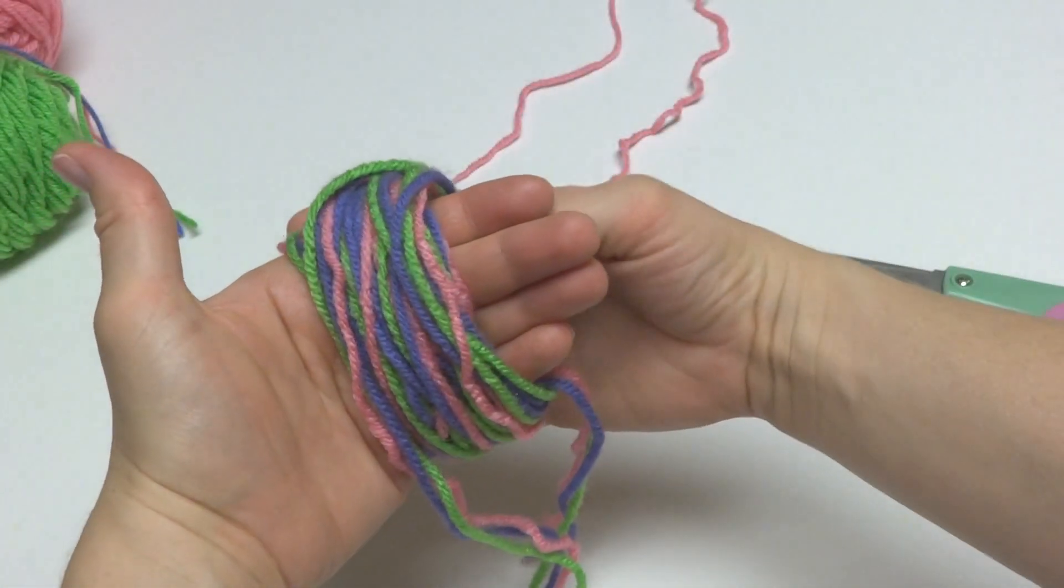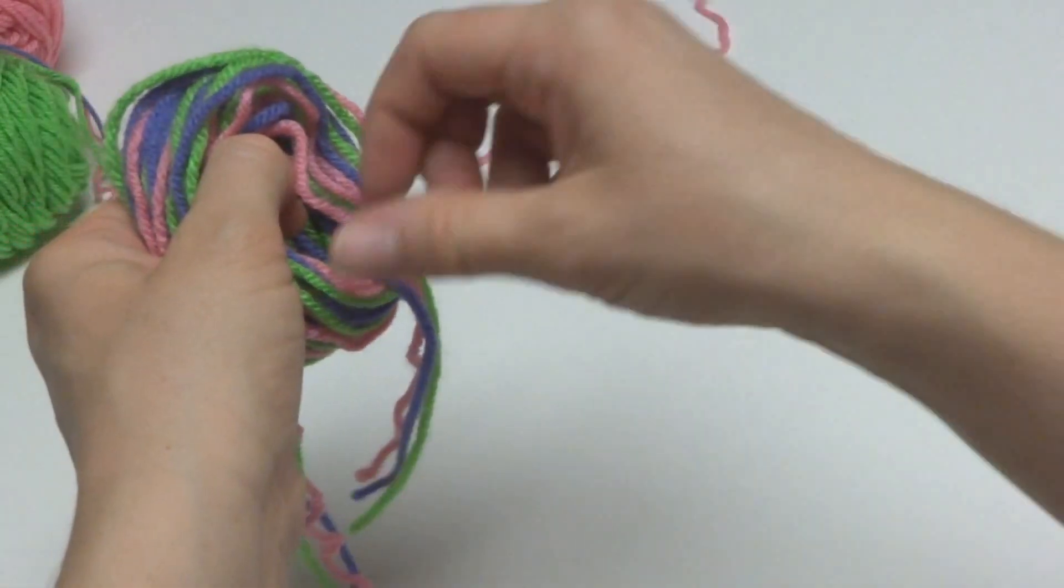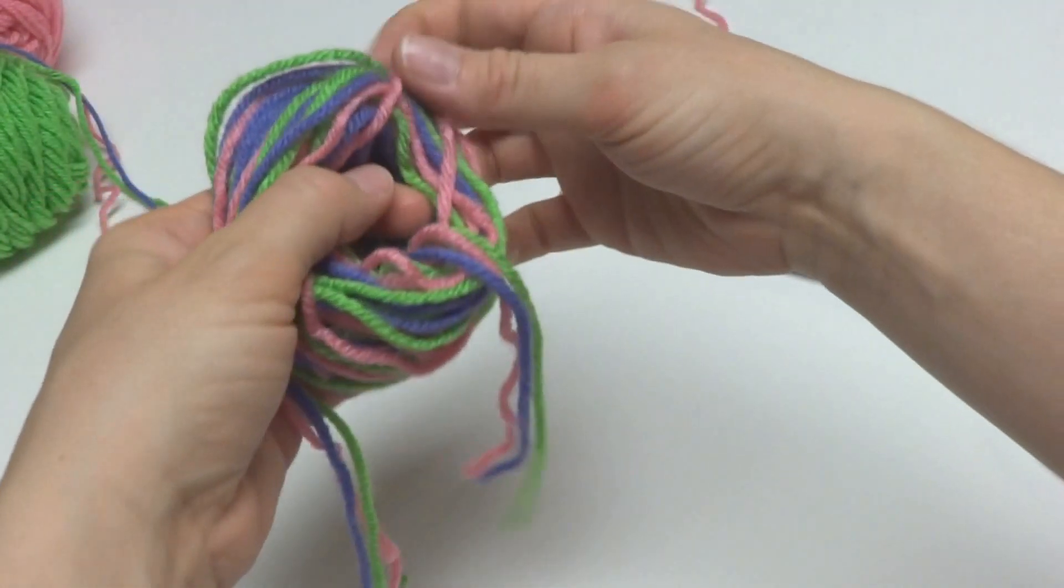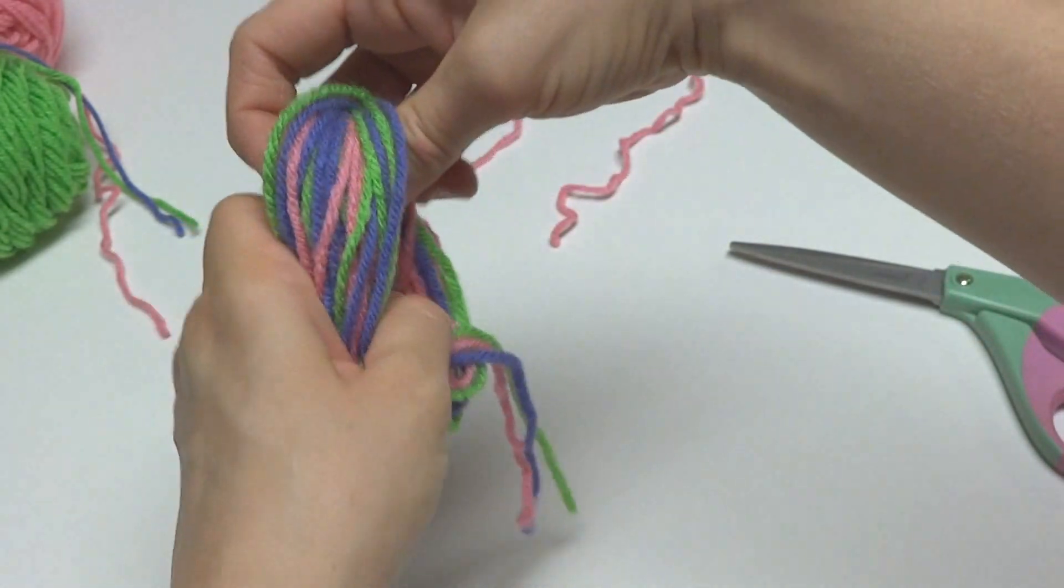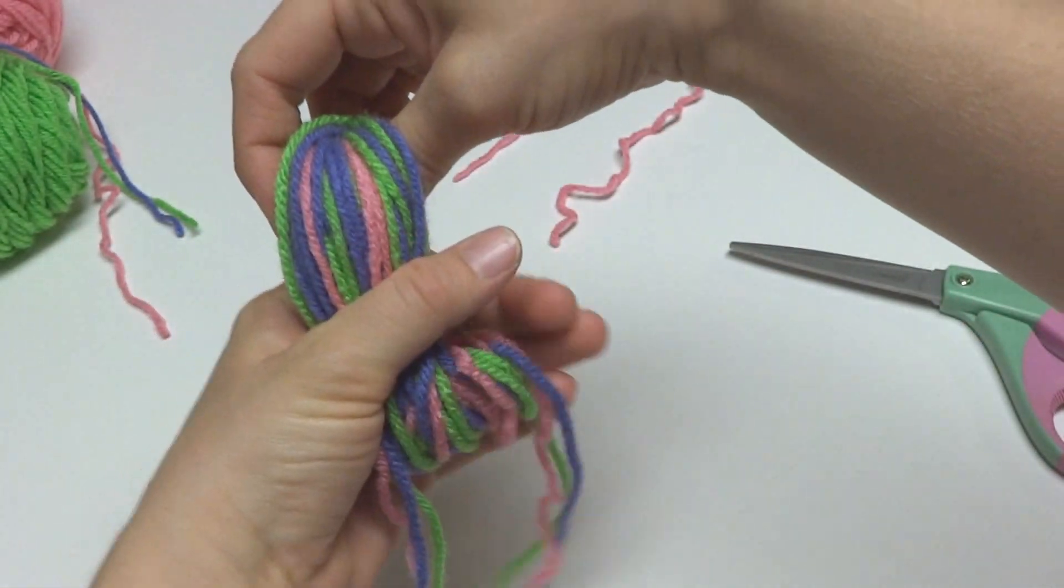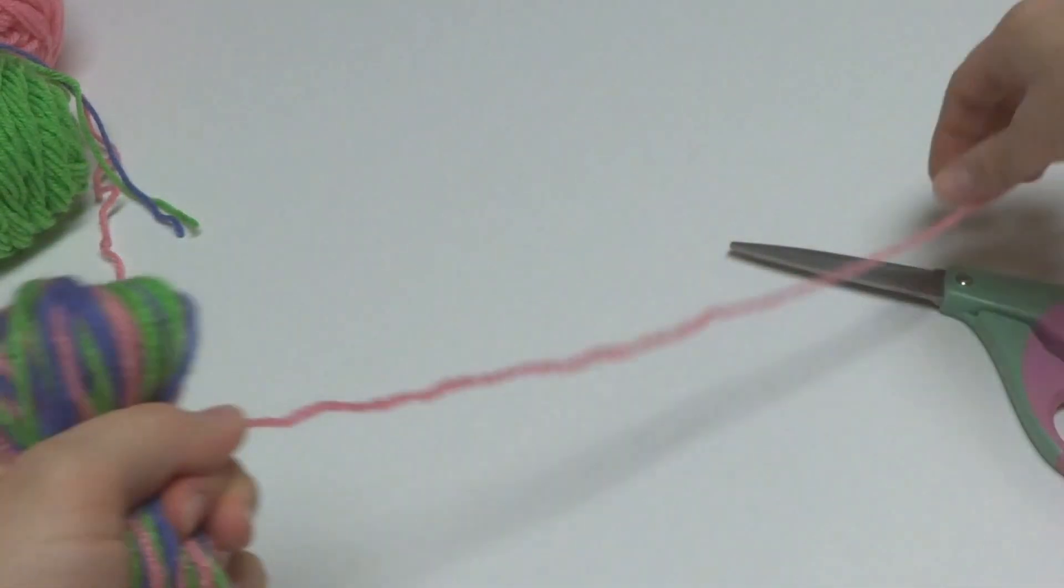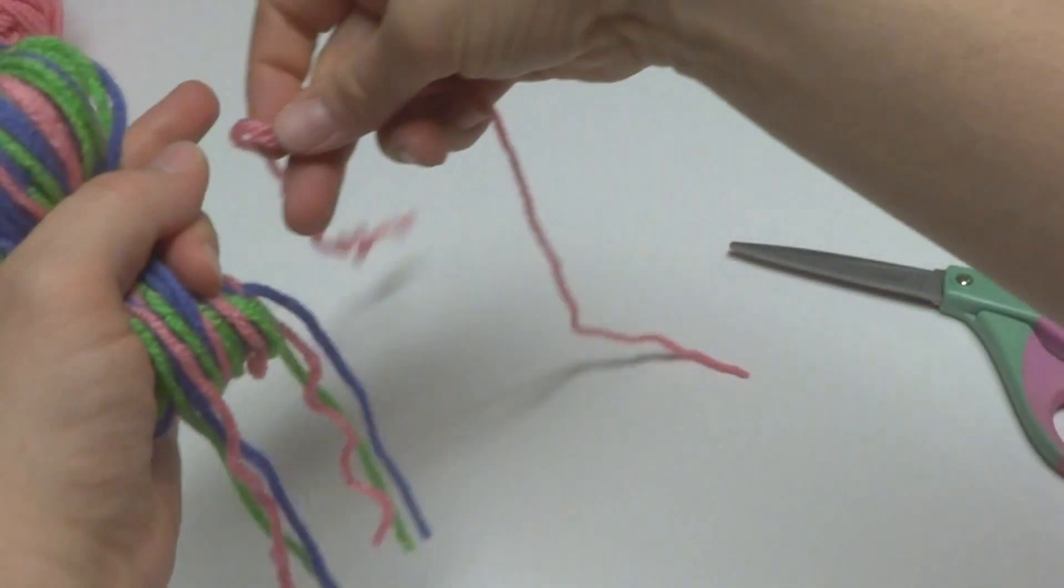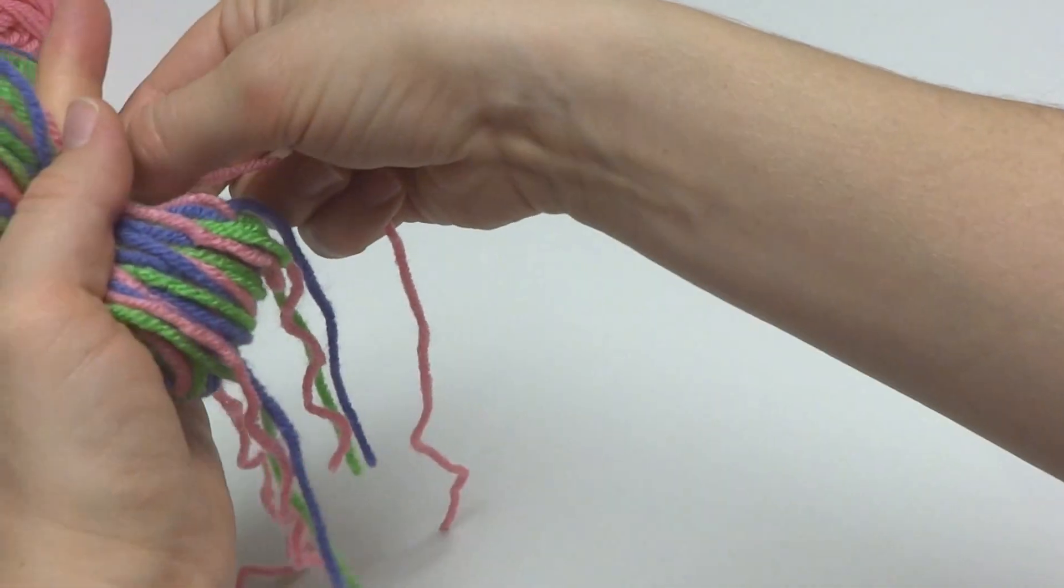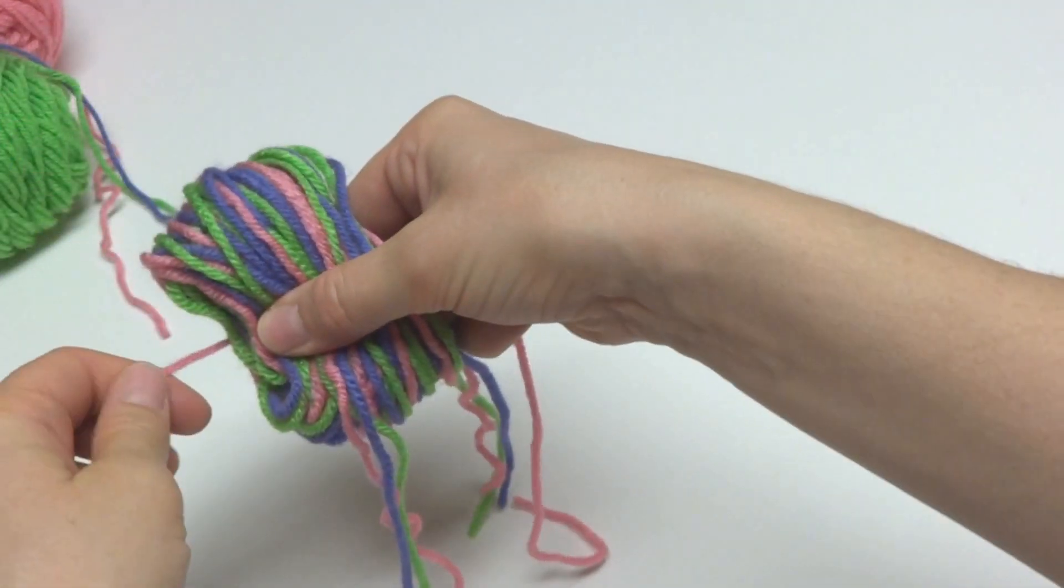So we're going to carefully slip the bundle off of our hands, keeping the strands down here. You're just going to hold it in the middle, not letting go. And then the strand that we cut earlier, you're just going to take that, you're going to wrap it around the bundle.